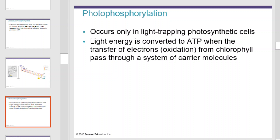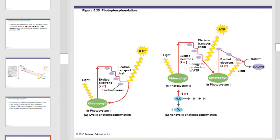Photophosphorylation occurs only in light-trapping photosynthetic cells. Light energy is converted to ATP when the transfer of electrons, oxidation, from chlorophyll pass through a system of carrier molecules. This is an illustration of photophosphorylation.